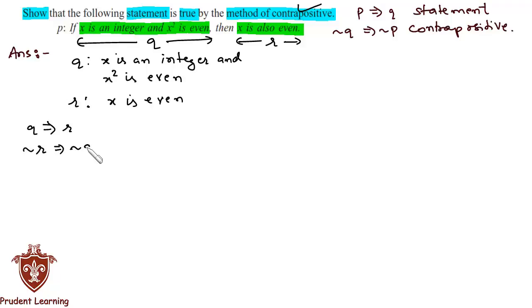Now if we wish to write it in words, we'll write it as: if x is not even, then x² is not even, where x belongs to Z (that is, x is an integer).